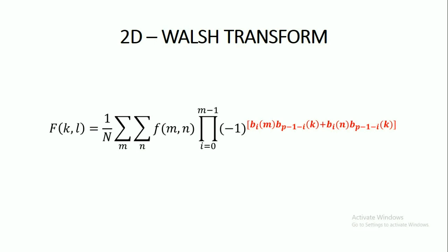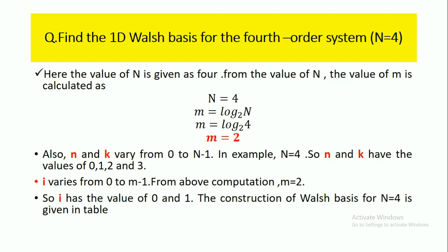The 2D Walsh transform is given by f(k,l) = (1/N) * summation of this equation. Now we will go through a simple problem to understand the Walsh transform.